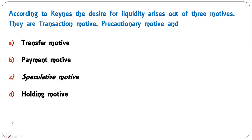According to Keynes, the desire for liquidity arises out of three motives: the transaction motive, the precautionary motive, and the speculative motive. This is a very famous concept given by Keynes and is closely correlated with the interest rate. C is the correct answer.